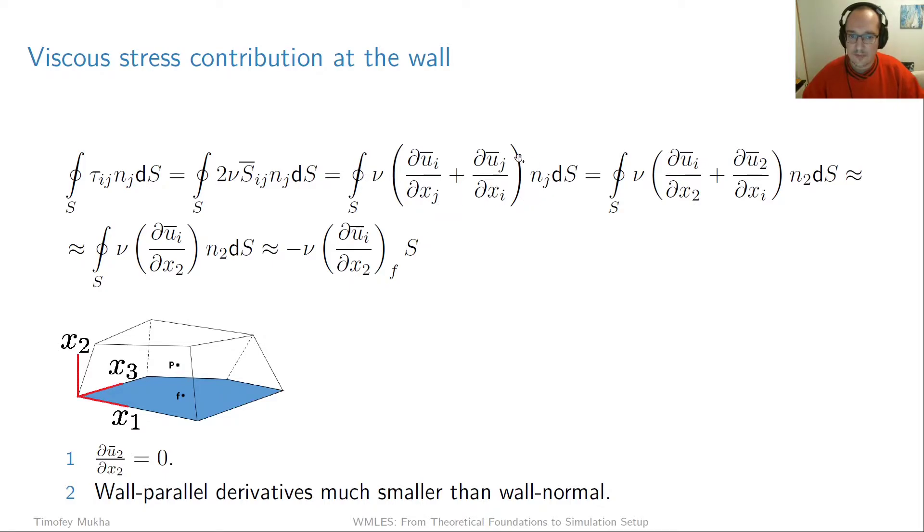Now the next thing we want to realize is that only one component of this vector n which is the normal to the face is going to be nonzero and that's the consequence of choice of our coordinate system. So the only nonzero component is obviously going to be n2 because the normal is pointing straight downwards, right? So its value is going to be minus 1. So that means that this whole expression transforms into this where the only derivative we have here is with respect to x2.